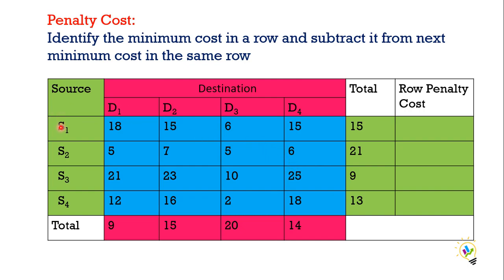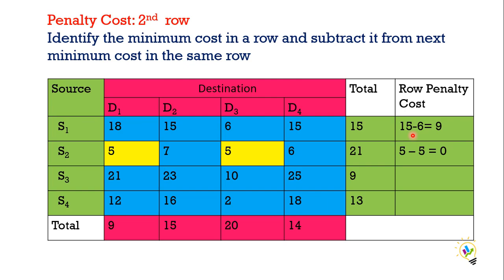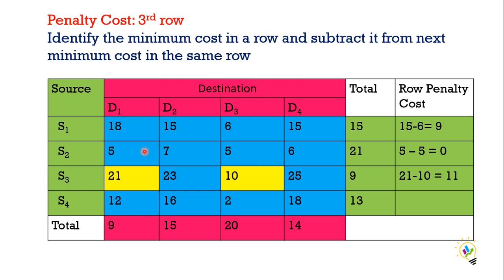Identify the minimum cost in a row and subtract it from the next minimum cost in the same row. For example, in the first row, the minimum cost is 6, and the next minimum cost is 15. So 15 minus 6 equals 9. In the second row, the minimum cost is 5 and the next minimum is also 5, so 5 minus 5 equals 0. Third row: 21 minus 10 equals 11. Fourth row: 12 minus 2 equals 10.